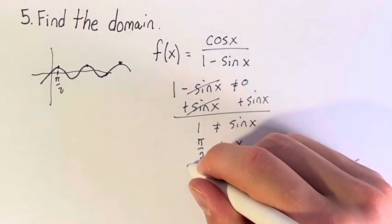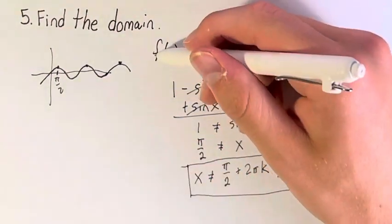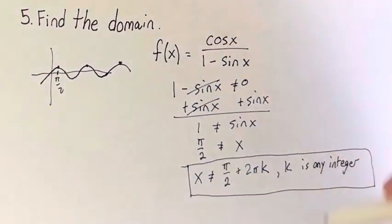That is how we get to this for any of these points on this periodic function. So this is the domain of f of x is equal to cosine x over 1 minus sine of x.